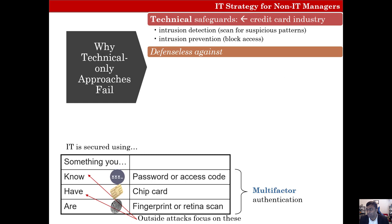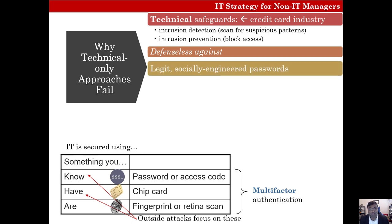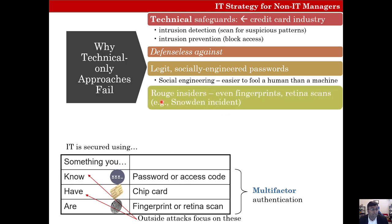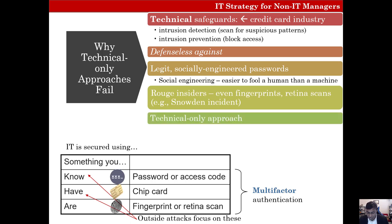However, these technical safeguards are defenseless when you give your password away because you're tricked into doing so, or when somebody installs spyware that logs all your keystrokes and captures them. It's easier to fool a human being than a machine. They also don't handle rogue insiders — even fingerprints and retina scans, as we can see from the Snowden incident, provide no protection when the threat is an insider. This purely technical approach over-emphasizes identifiable risks and lulls firms into an unfounded complacency.